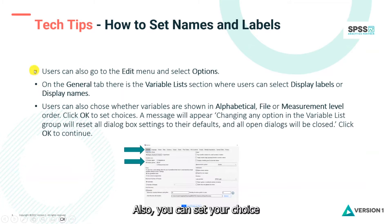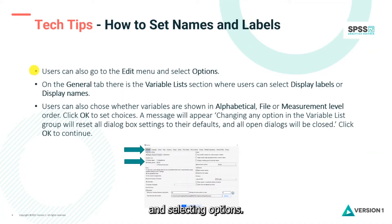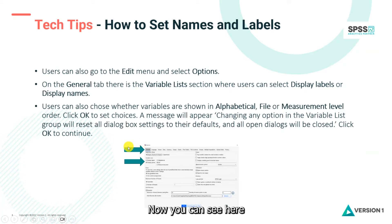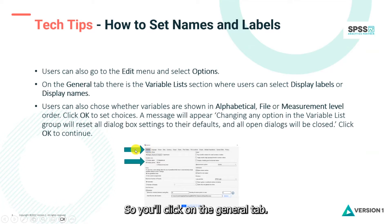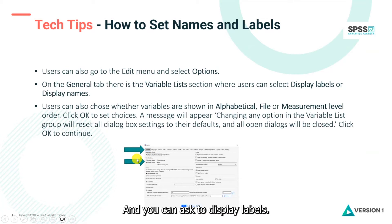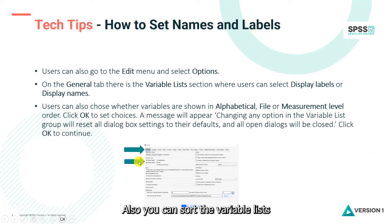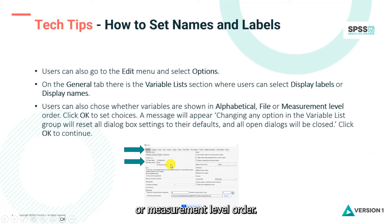You can also set your choice by going to the Edit menu and selecting Options. This will bring up the Options dialog box. Click on the General tab, then go to the Variable List section, where you can choose to display labels or display names. You can also sort the variable lists in alphabetical, file, or measurement level order.